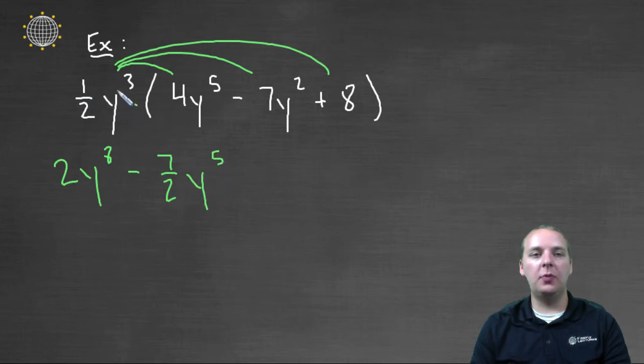And then lastly, one-half y³ times 8, or positive 8, one-half times 8 would give us 4. And then we'd have just the y³, because there are not any additional y's or anything like that. So that would be our final answer here.